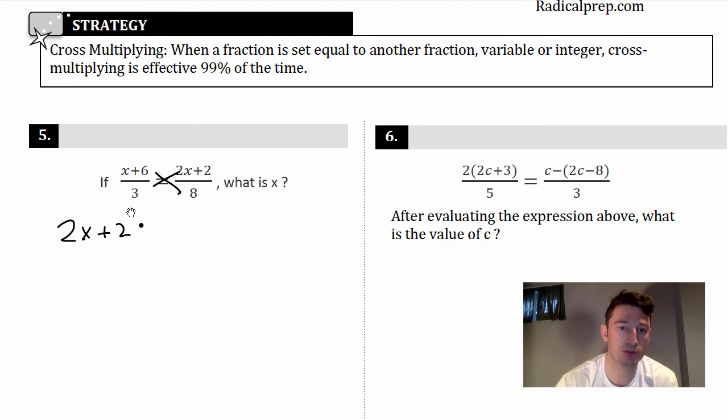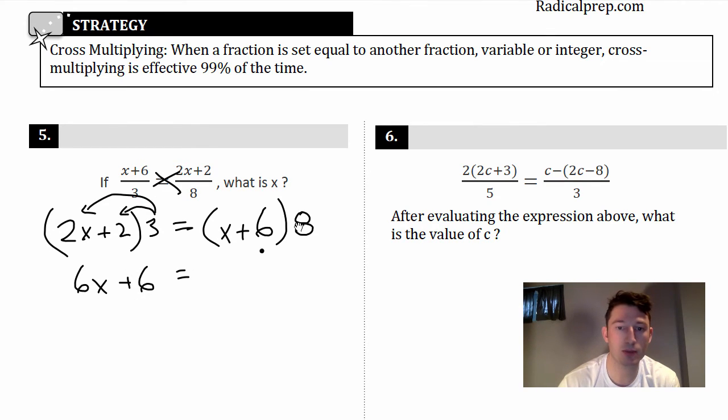So when you do it, it says when a fraction is set equal to another fraction, variable or integer, cross multiply, and it's effective like 99% of the time. So let's check it out. We've got these two equations set equal, and I want to know what is x. Well, all they told me, or all they taught me in school was just do this: make the cross there and multiply. So it's 2x + 2 times 3, I'm writing that stuff there, equals and then it's this stuff times this stuff, so it's x + 6 times 8.